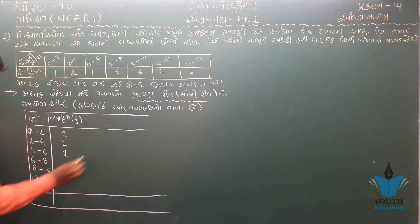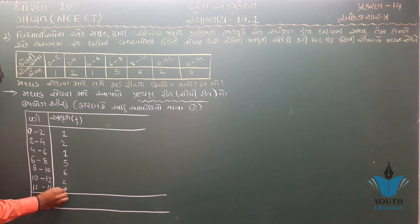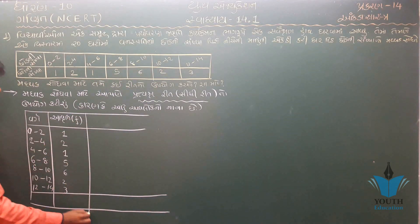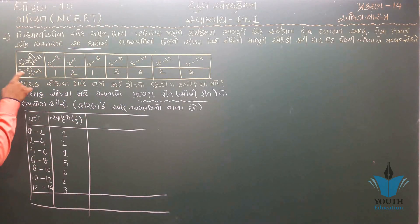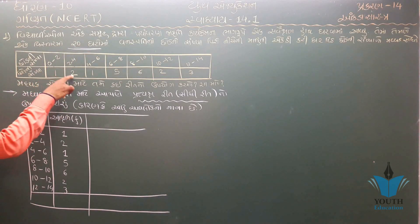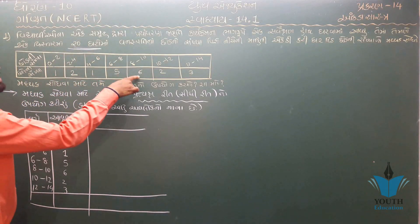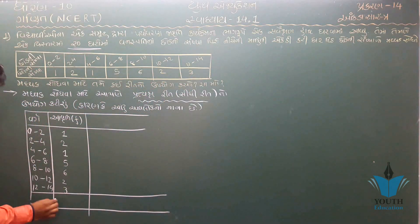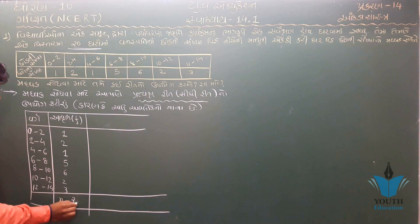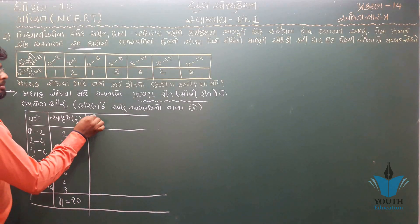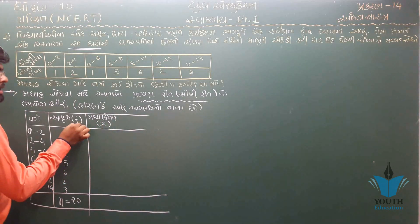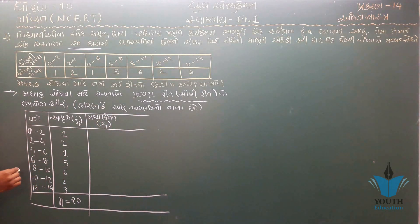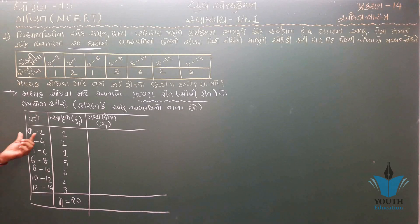આ ડેટા સેટ છે: 8.50, 8.50, 9.50, 10.90, 10.50, 10.50, 10.50, 10.50 — આ મૂલ્યો (xᵢ) નોંધવામાં આવ્યા છે.